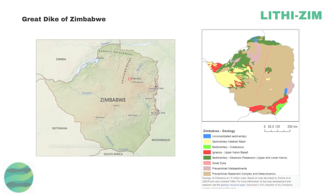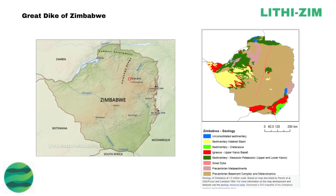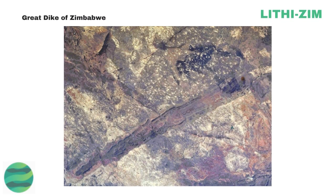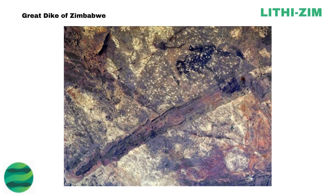The Great Dyke is a linear geological feature that trends nearly north-south through the center of Zimbabwe, passing just to the west of the capital Harare. It consists of a band of short, narrow ridges and hills spanning approximately 550 kilometers or 340 miles. The hills become taller as the range goes north and reach up to 460 meters above the Mbwe range.